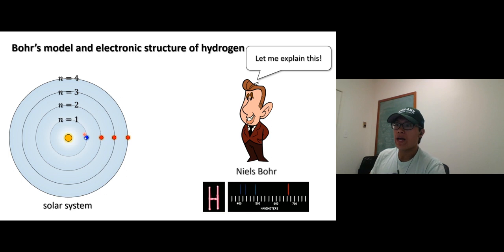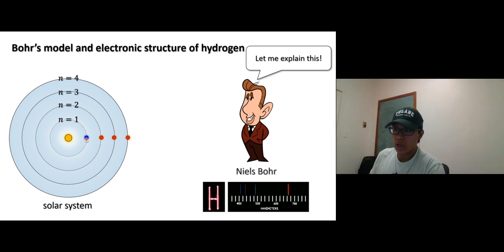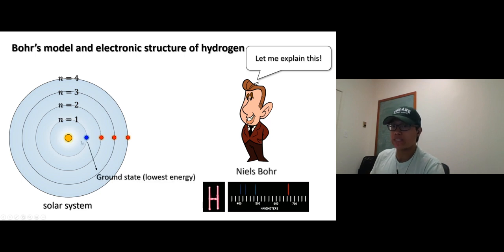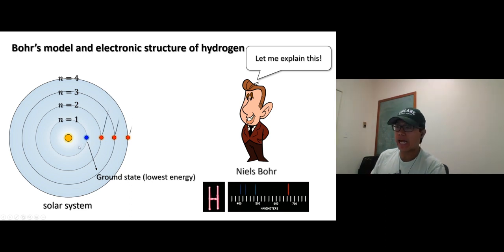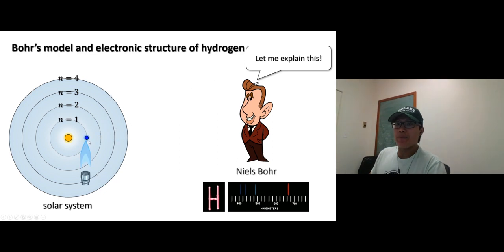There are energy levels: one, two, three, four. If the electron is at energy level one — n equals one — it's closest to the nucleus. We call this the ground state, the lowest energy. Any other energy level beyond the ground state we call the excited state.